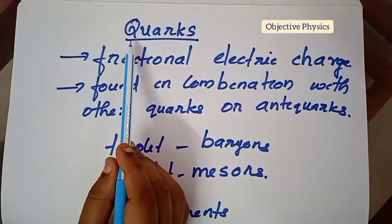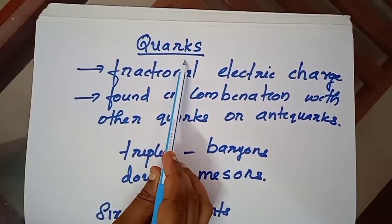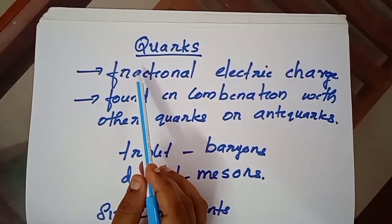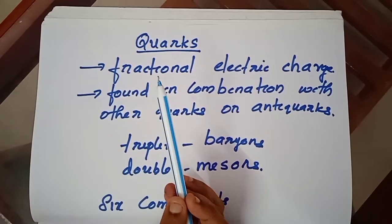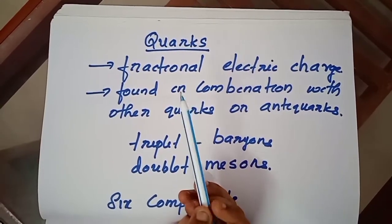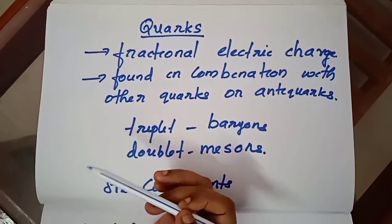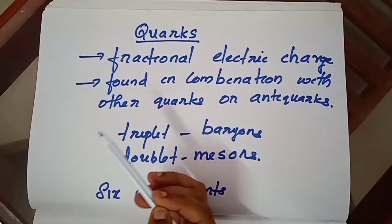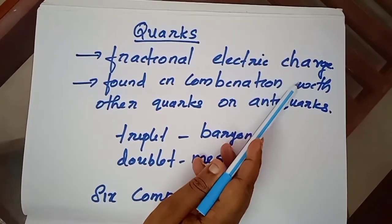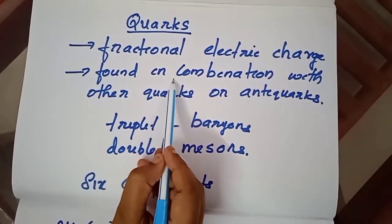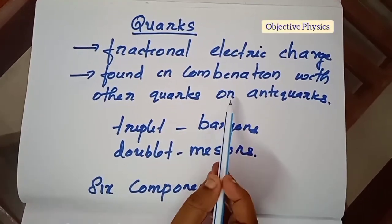In this section we will discuss about quarks. Quarks are the smallest building block of matter as of today — they are the fundamental constituent of all the hadrons. Their properties are: they have fractional electric charge, and they are found in combination with other quarks or anti-quarks.